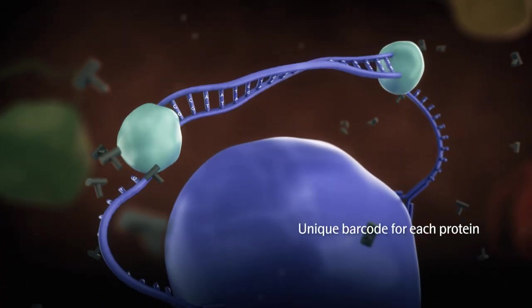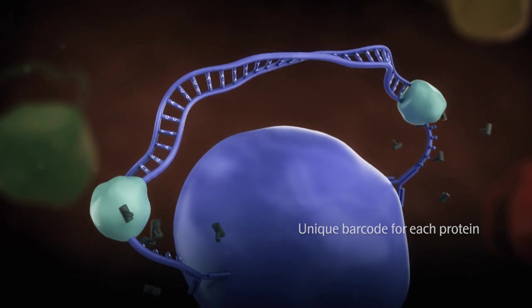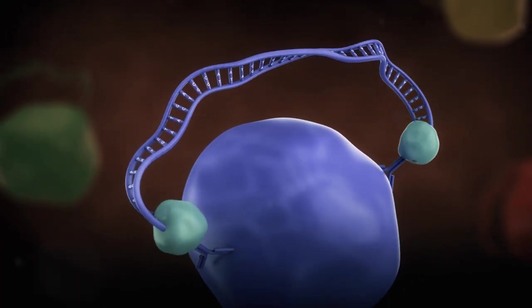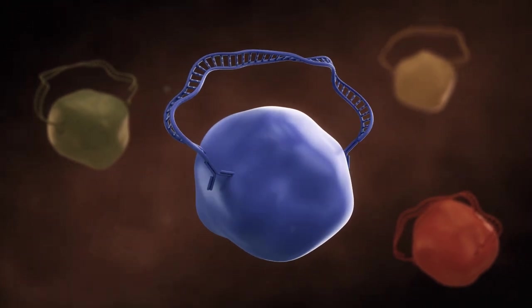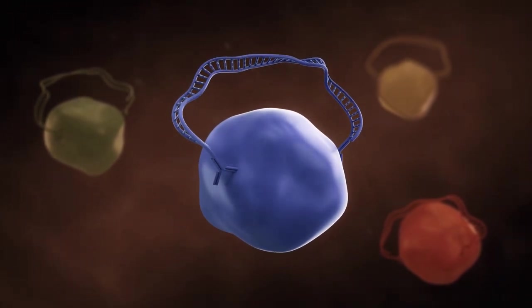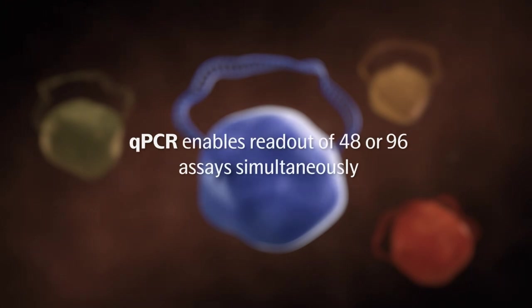Only the correctly hybridized tags are extended to an amplicon with a unique sequence for each protein. O-link target using qPCR enables a digital readout of 48 or 96 assays in 96 samples simultaneously.